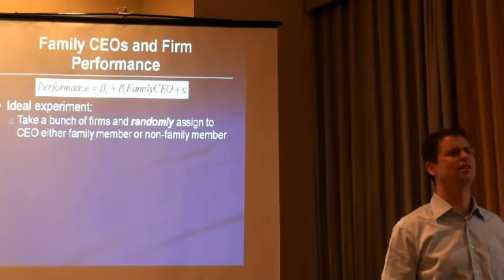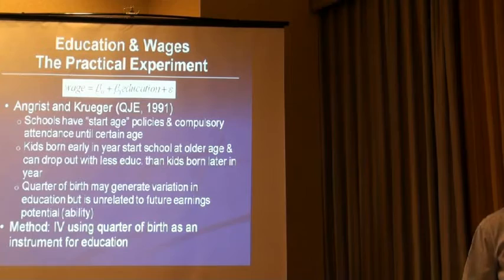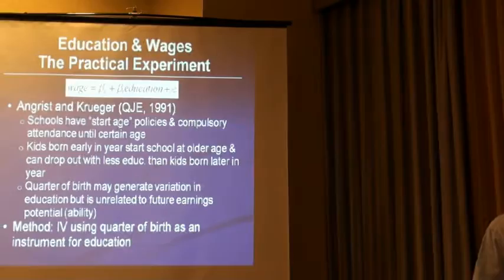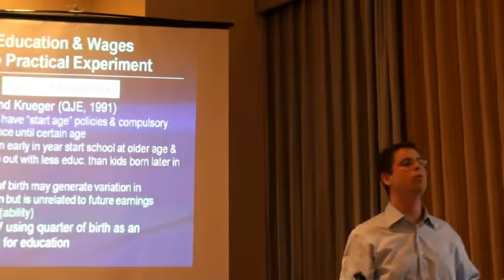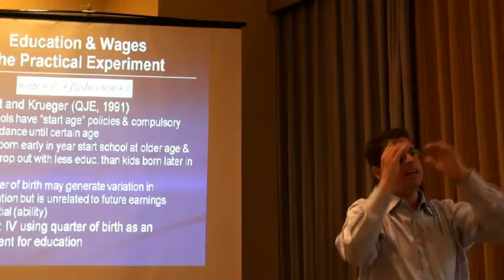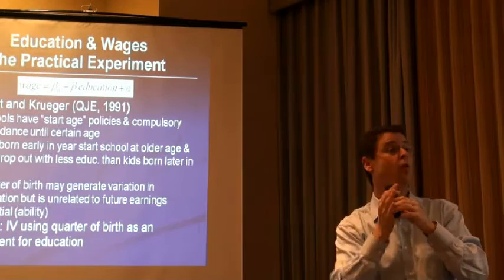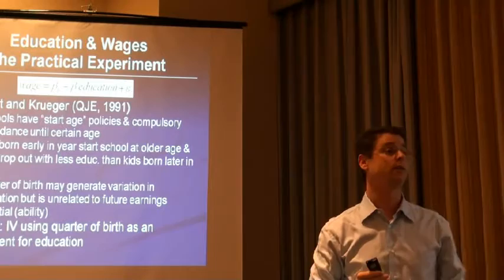A question from the audience: if beta-1 is significant, it gives that representation, but if it's not significant, can you say there's no relation? No, we can only fail to reject. And frankly, a practical problem when you start doing IV is statistical power. You're taking all the variation in education and using just a piece of it to identify beta-1. When the variation in x goes down, standard errors go up. Power is a big issue — that's why big samples are important.